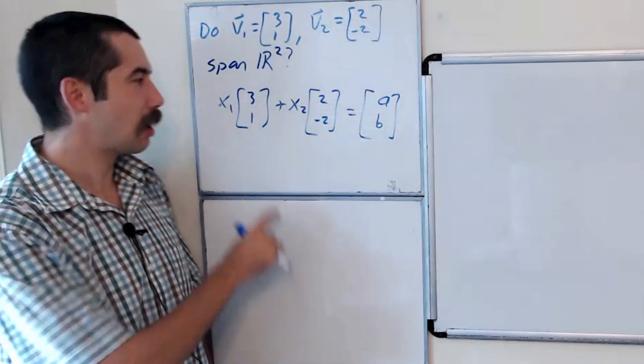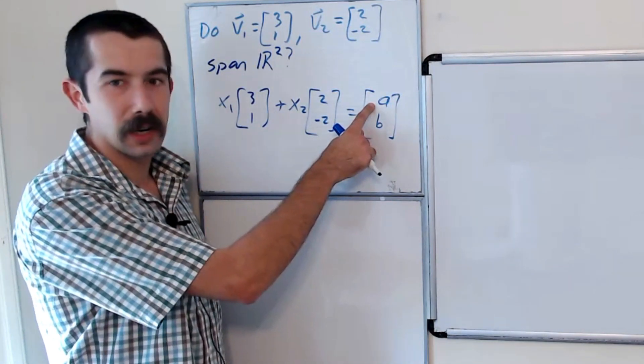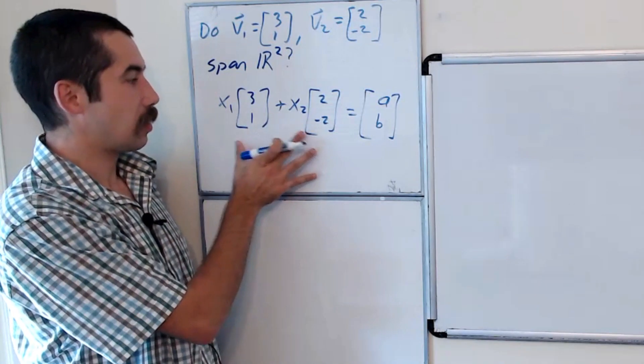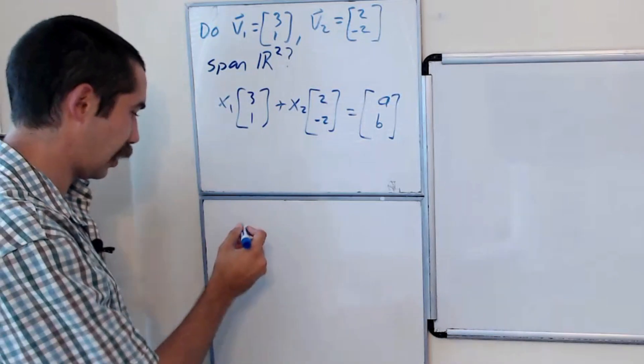So another way to say that is we want to express x1 and x2 in terms of a and b. Okay, so let's just try to solve this vector equation. Let's combine this left-hand side.